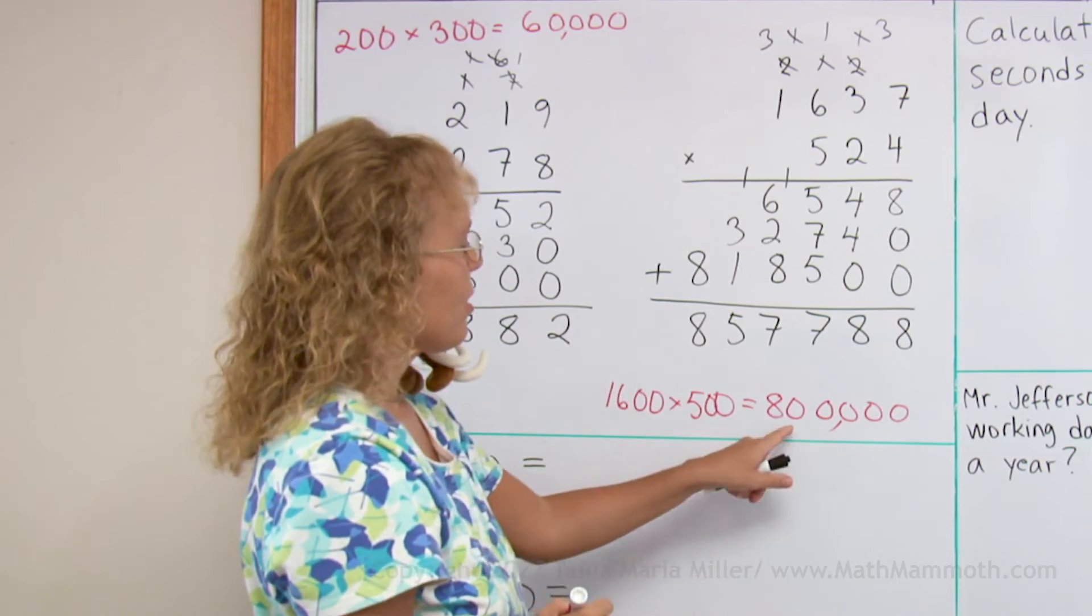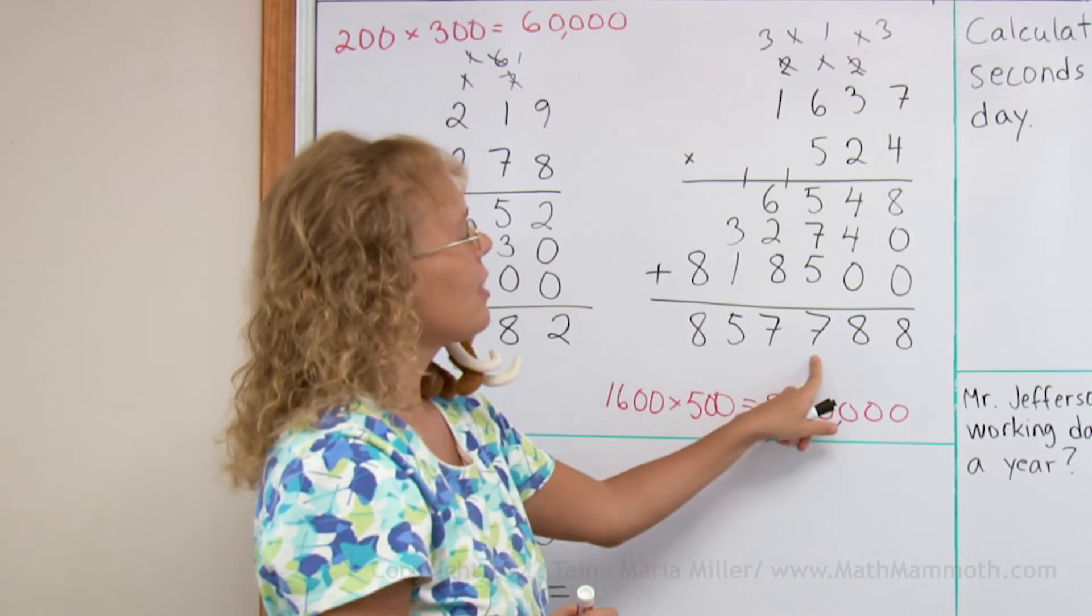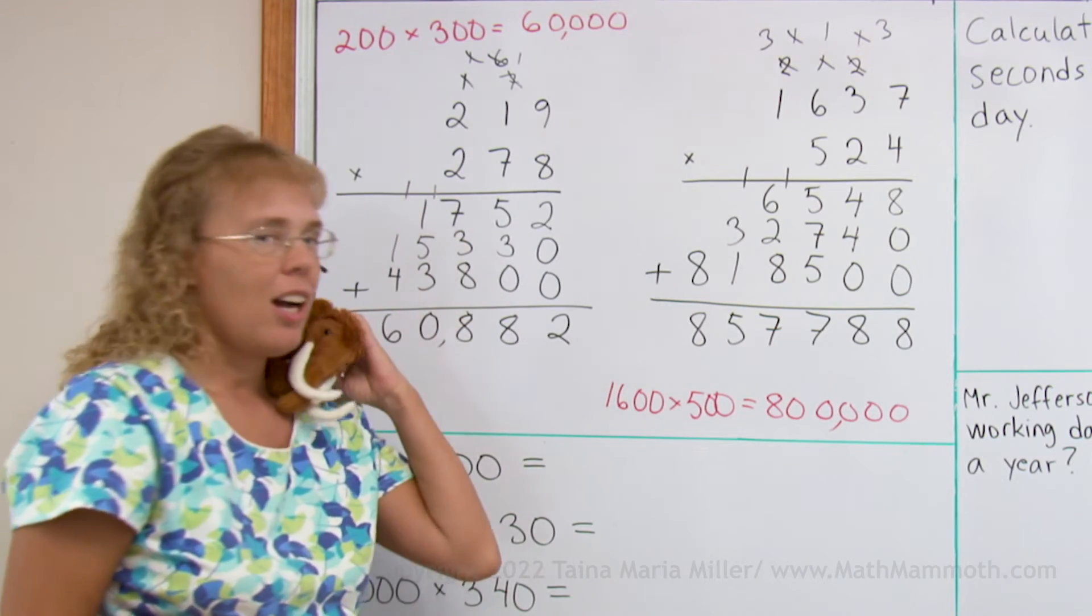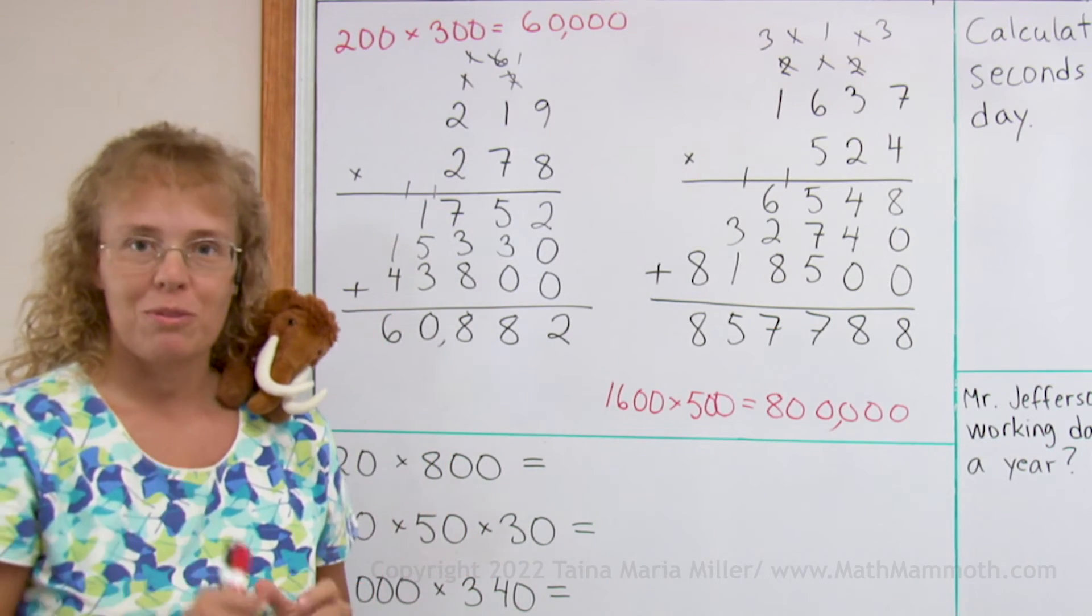All right, 800,000, 857, 788. Oh, is that Matty? Oh, Matty has a bonus problem for you.